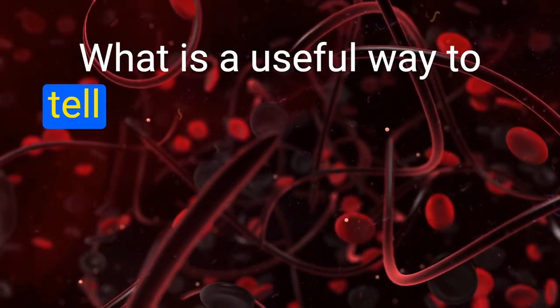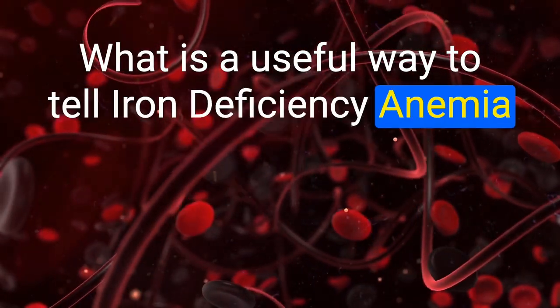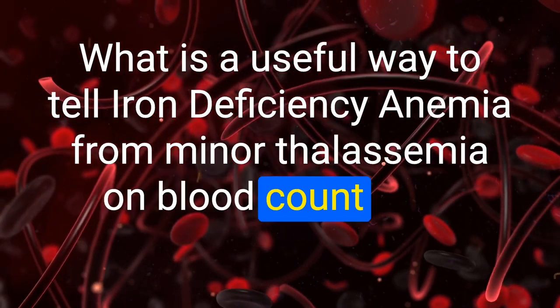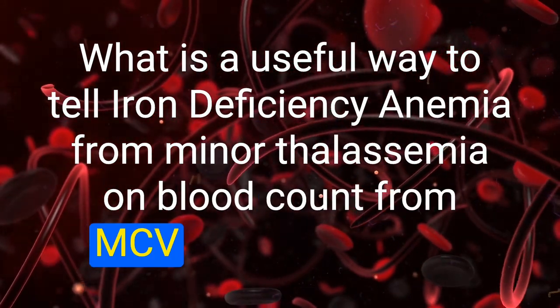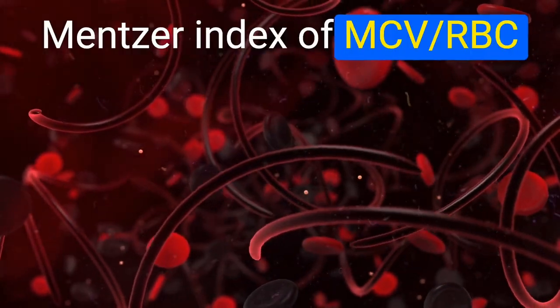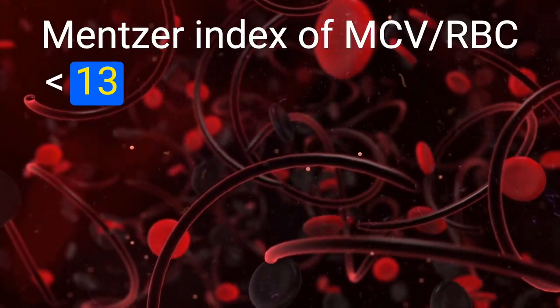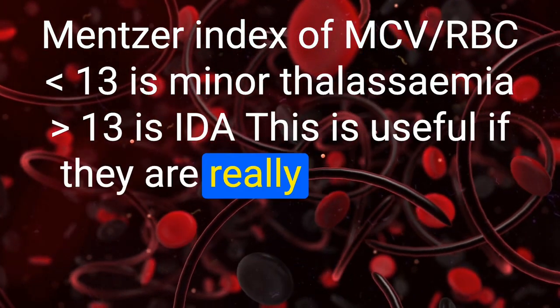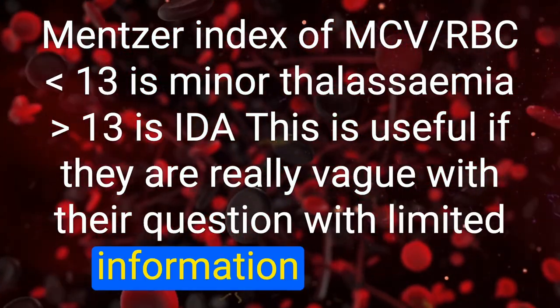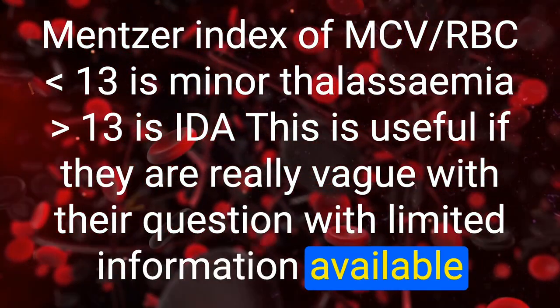What is a useful way to differentiate iron deficiency anemia from minor thalassemia using MCV and RBC count? Mentzer index: MCV divided by RBC. A value less than 13 suggests thalassemia; greater than 13 suggests iron deficiency anemia. This is useful when the question provides limited information.